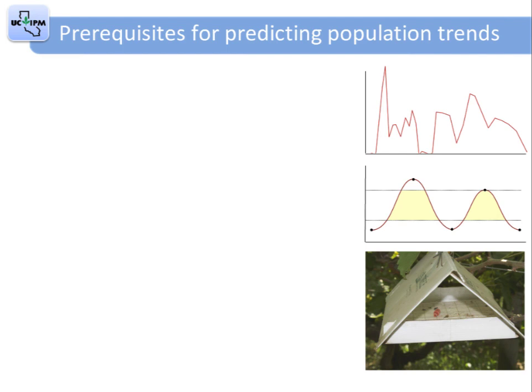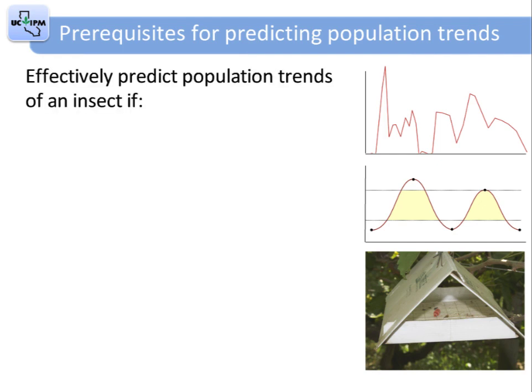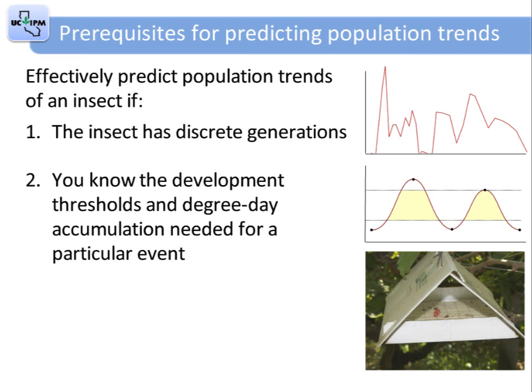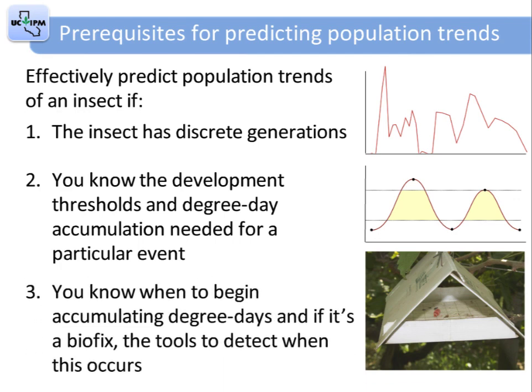Now that you've got a good understanding of the terms and the basics of how degree days are calculated, let's look at what it takes to use them in the field to manage your pests. You can effectively predict population trends of an insect if the insect has discrete generations, you know the development thresholds (upper and lower) and the degree day accumulation needed for a particular event, you know when to begin accumulating degree days, and you have tools to detect the biofix. If all these are known, a phenology model can be used to manage your pests.